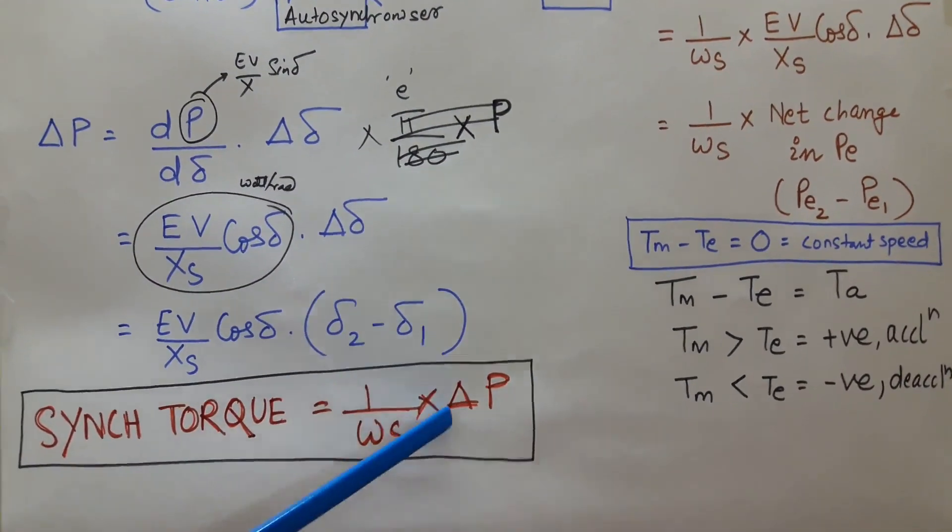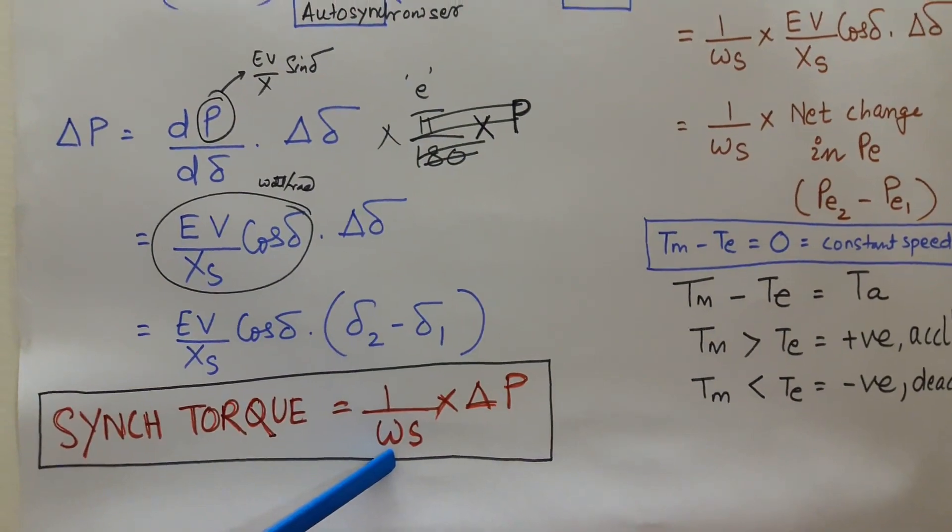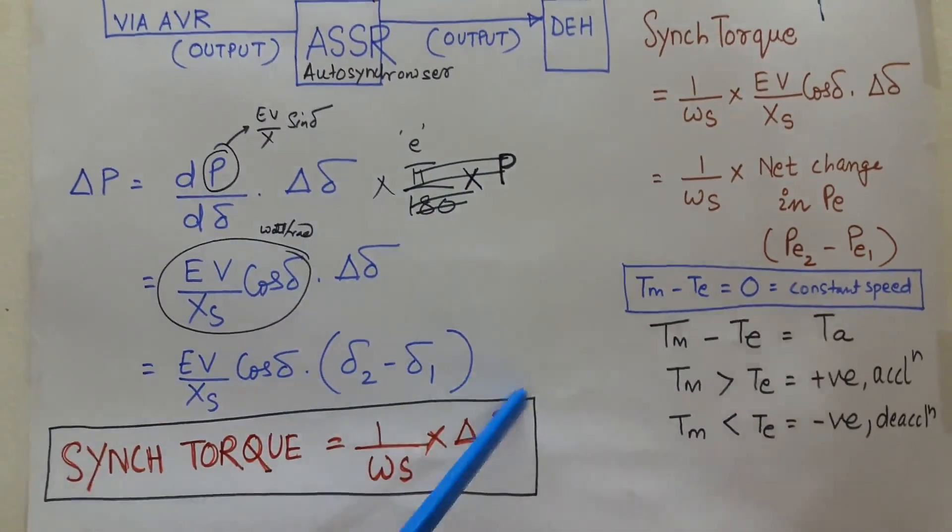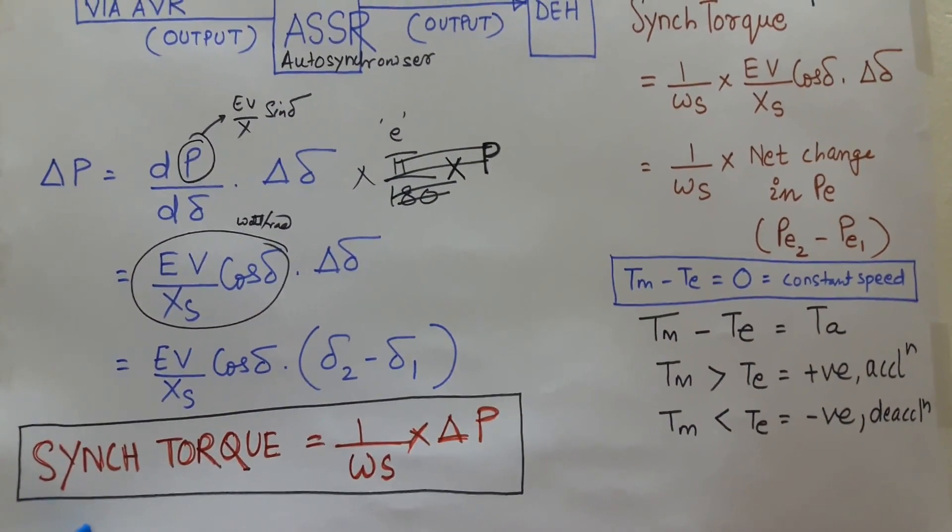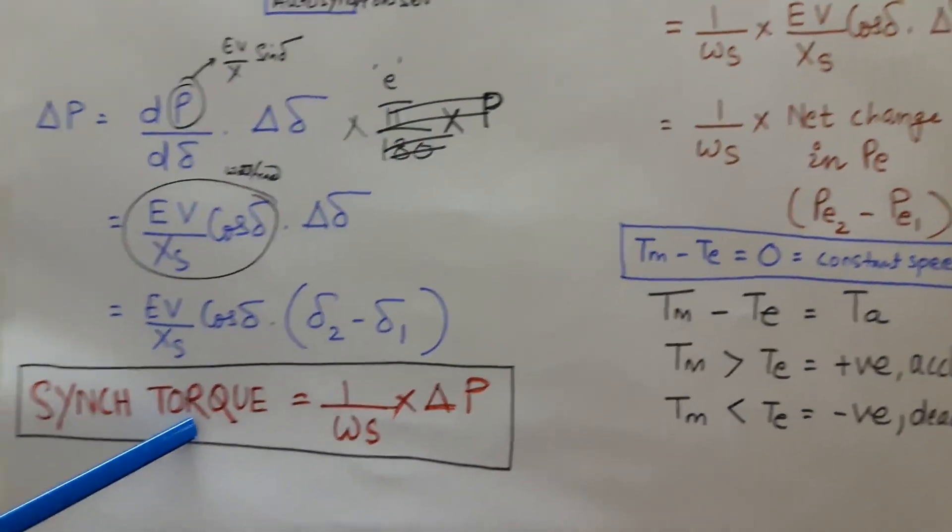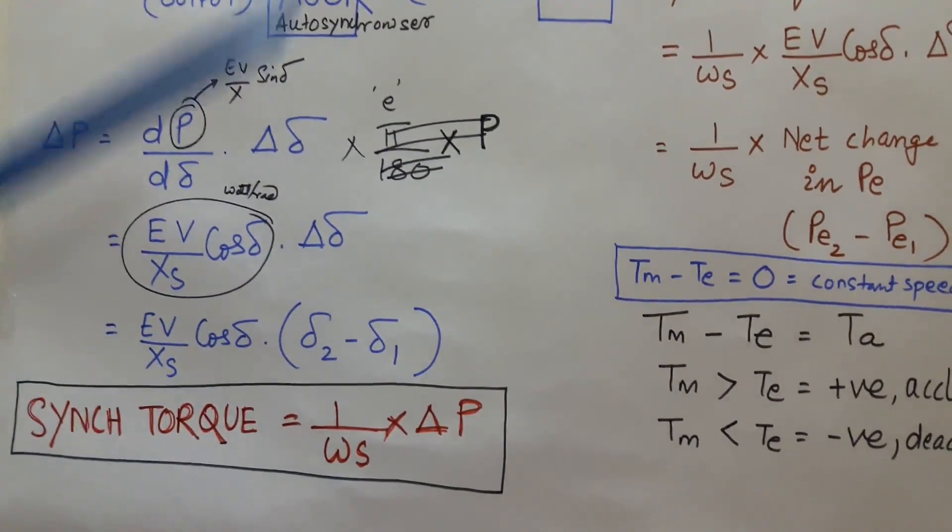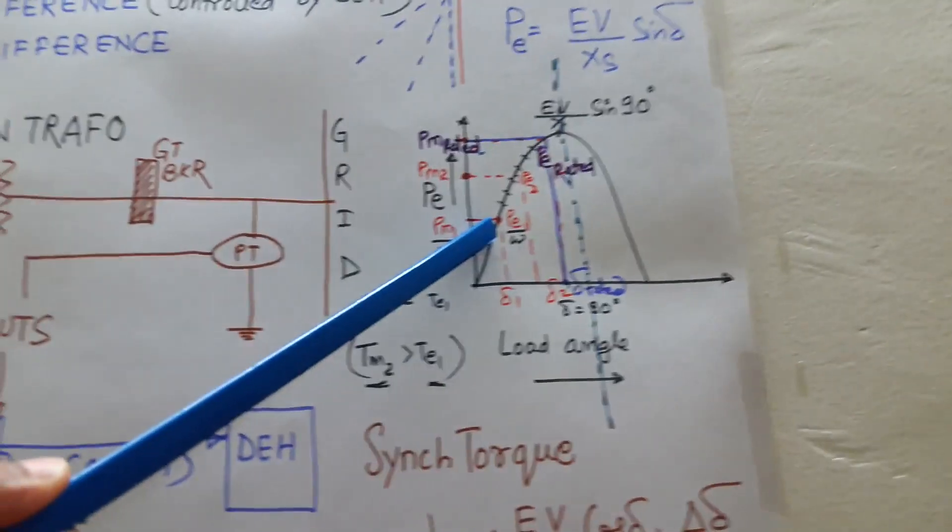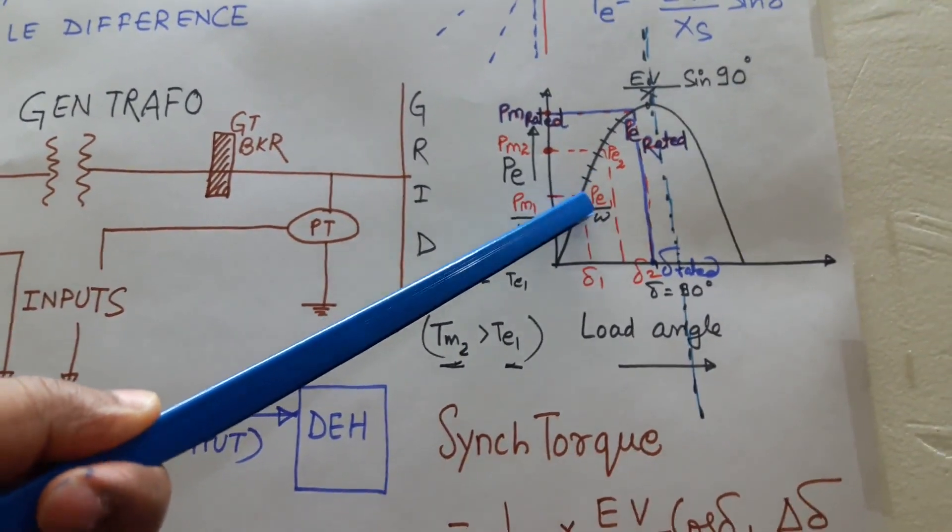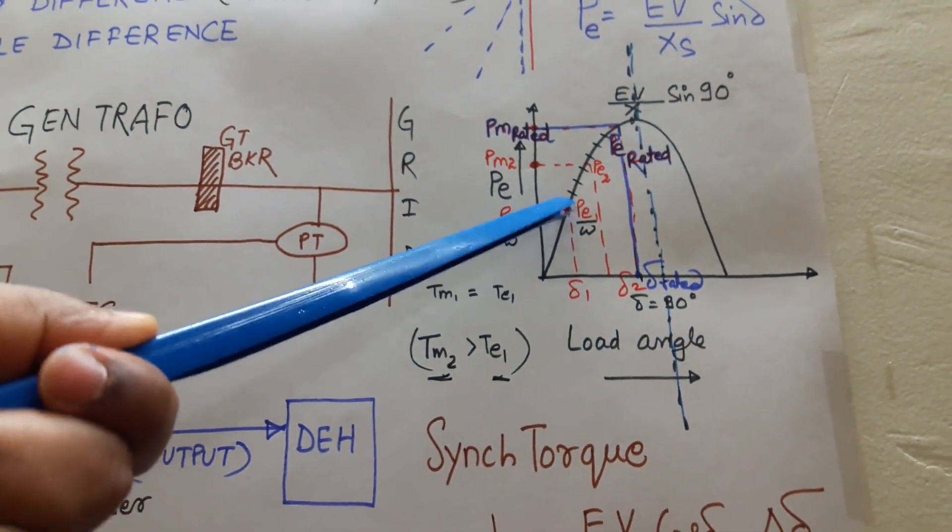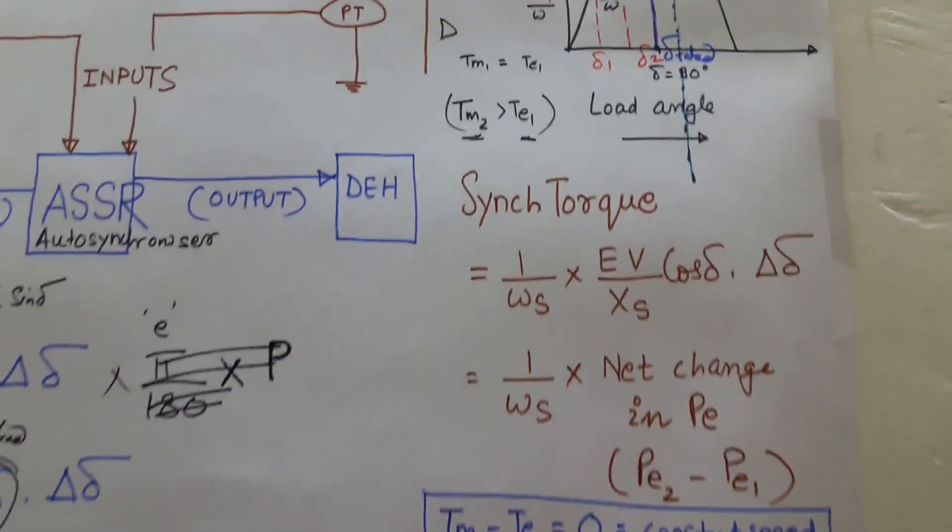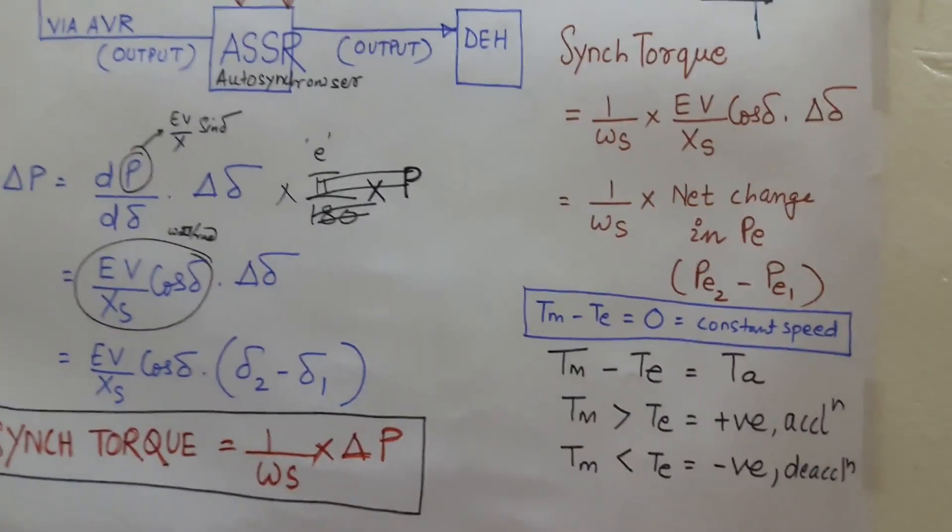And when this synchronizing power is divided with omega S, means the angular speed, we are getting the synchronizing torque. So I hope you are clear with the derivation of synchronizing torque now. And the synchronizing torque is shown here. The net change in torque, the extra torque gained by the generator to bring its output from PE1 to PE2 is known as synchronizing torque. Thank you and catch you in the next video.